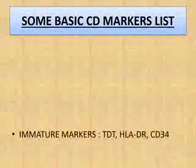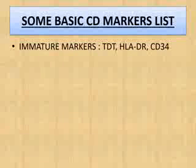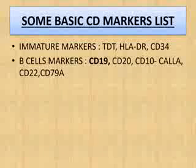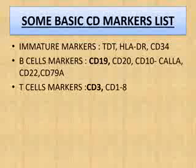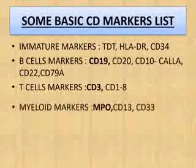Now let's have a quick recall of some CD markers — these are must-know points. TDT, HLA-DR, and CD34 are immature markers. CD19, CD20, CD10 (also known as common ALL antigen or CALLA antigen), CD22, and CD79A are B cell markers. CD3 and CD2/CD8 are T cell markers.